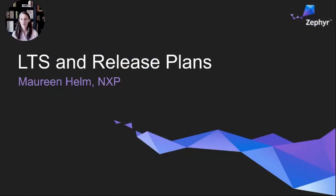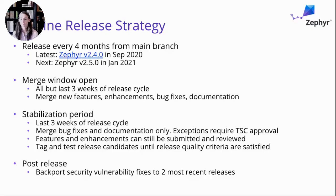Thanks, Johan. My name is Maureen Howell. I work for NXP and have been working on Zephyr for a number of years as a maintainer for NXP platforms in the ARM architecture, as well as a member of the Technical Steering Committee. I'm going to spend the next few minutes giving an overview of releases — both our mainline releases and our long-term support releases. Starting with mainline releases: we have adopted a release cadence of every four months, built off the main branch. Our most recent release was 2.4, just over a month ago, and we are actively working on 2.5 scheduled for January 2021.